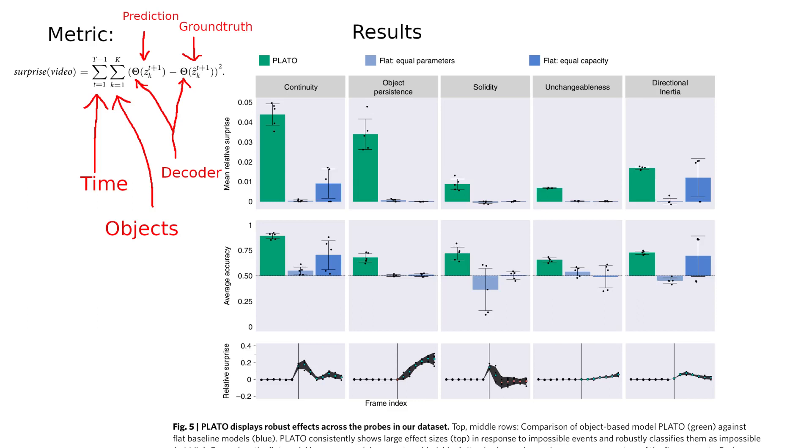They showed that their model can recognize all of the five intuitive physics aspects that they were looking for, at least with some accuracy better than 0.5. But at the same time, the results are not super strong.